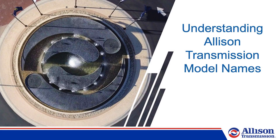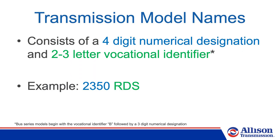Understanding Allison Transmission model names: Allison Transmission models consist of a four-digit numerical designation and a two- or three-letter vocational identifier. Bus Series models are an exception to this — they begin with the vocational identifier B, followed by a three-digit numerical designation, like the B400.